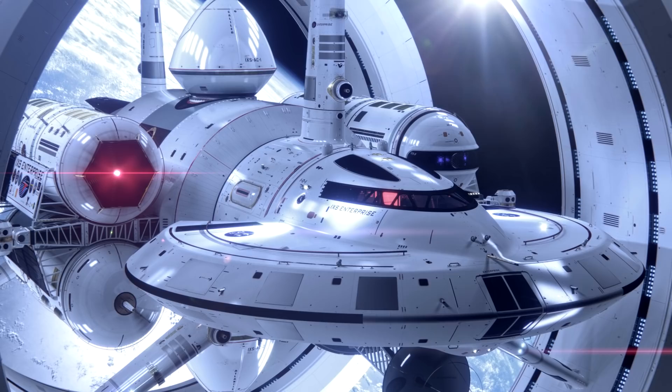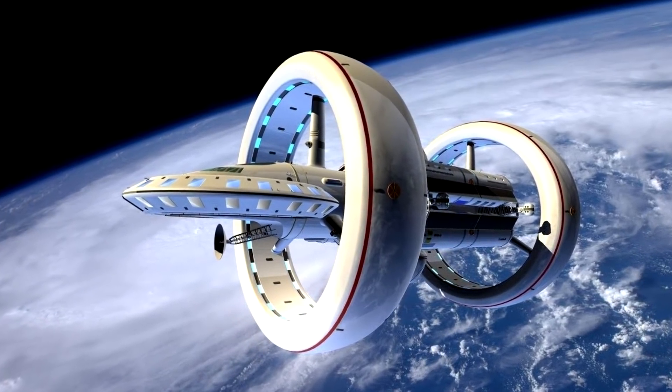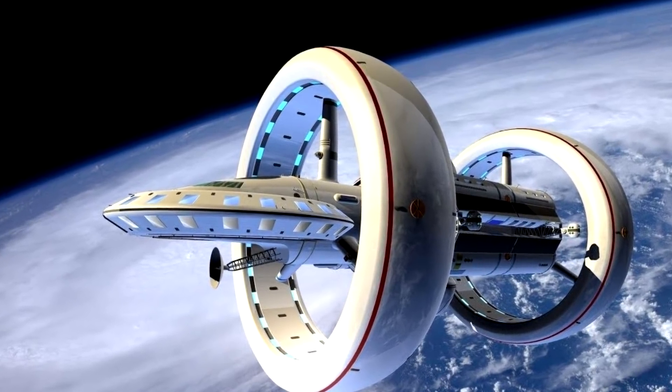And this is what he came up with. This is the IXS Enterprise, a piece of art revealed by Dr. White of what an actual Alcubierre warp ship would look like. Note the two rings to generate both the contraction and the expansion of space near the ship.